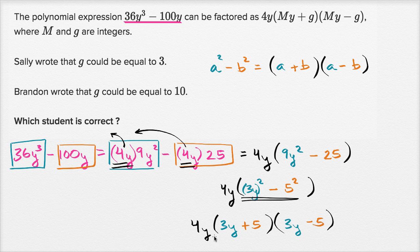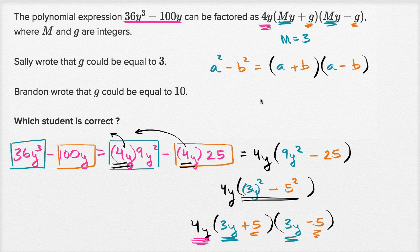So now that we factored this, let's go back to what they originally told us. We have 4y, so this 4y corresponds to that 4y. And then you have my + g, and then you have my - g. So the my is the 3y. So we could say that m is equal to 3. And then we do +5 and -5, plus g and minus g. So g, if we're pattern matching right over here, g is going to be equal to 5. So what's interesting about this problem is that neither one of them are correct. Neither is correct. g is equal to 5. That was a tricky one.